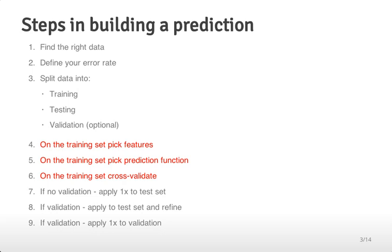This is going to be focusing on three components of the building and prediction function process: first, picking features; second, picking prediction functions; and third, using cross-validation to be able to determine which of those features and predictive functions are going to work best.